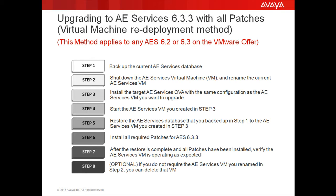Step 4, start the AEServices virtual machine you created in Step 3. Step 5, restore the AEServices database that you backed up in Step 1 to the AEServices virtual machine you created in Step 3. Step 6, install all required patches for AEServices release 6.3.3. Step 7, after the restore is complete and all patches have been installed, verify the AEServices virtual machine is operating as expected. And lastly, Step 8, which is an optional step — if you do not require the AEServices virtual machine you renamed in Step 2, then you can delete that virtual machine.